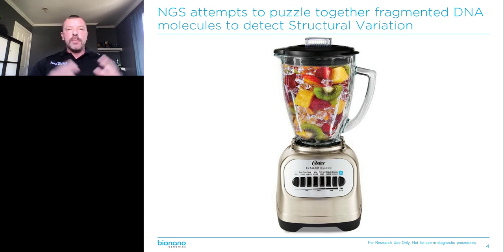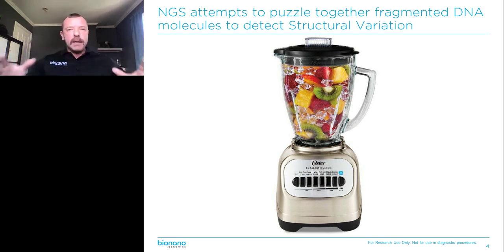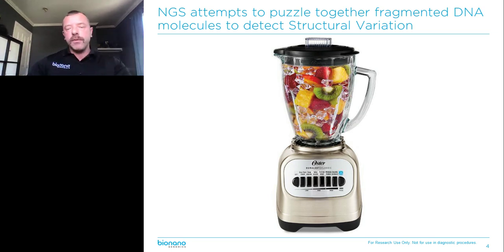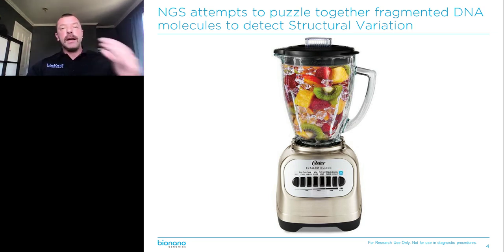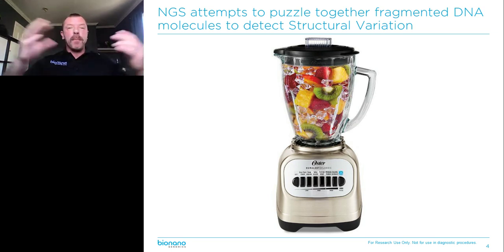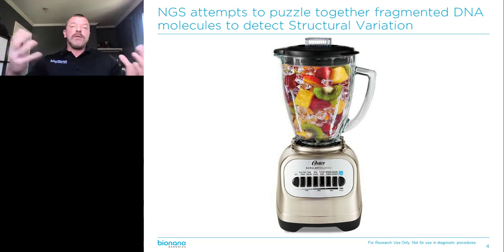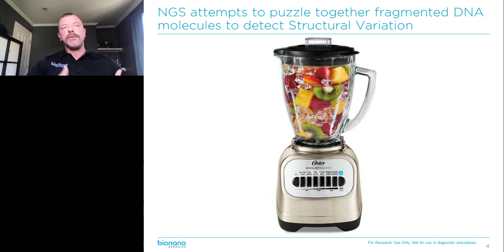But that's exactly what you do with NGS. You take a structurally perfect genome and blend it, shred it into tiny little fragments of a couple hundred base pairs, analyze those, piece them back together, and then you try to figure out what the structure looked like in the first place. It just doesn't work.